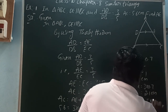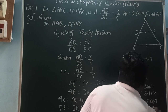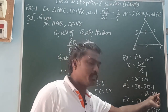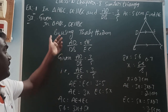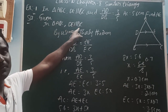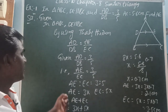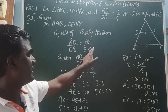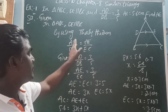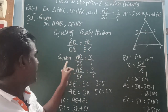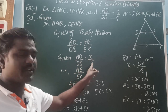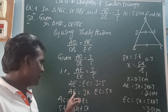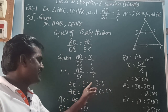EC equals 5x, that is 5 into 0.7, which equals 3.5 centimeters. The question asks for AE, so the length of AE is 2.1 centimeters. To summarize: in triangle ABC, DE is parallel to BC; by BPT or Thales theorem, AD by DB equals AE by EC, which is 3 by 5.